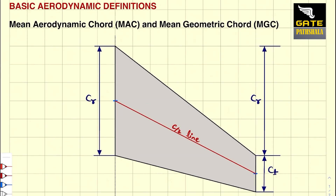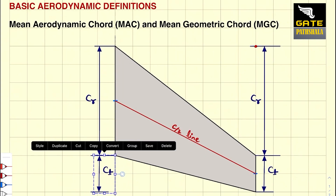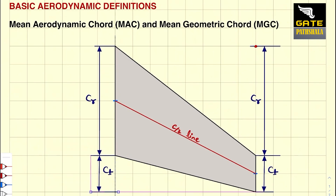So now you have a point which you can mark just above the leading edge of the tip chord. Measure the distance here and mark it there. Then measure the distance CT, and this CT distance we measure from the trailing edge of the root chord and mark a point like this. Then we join this line in this manner.